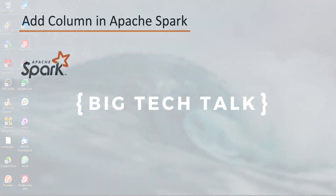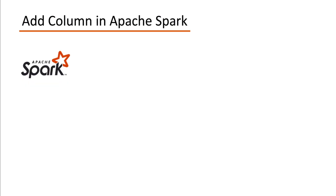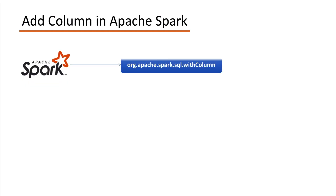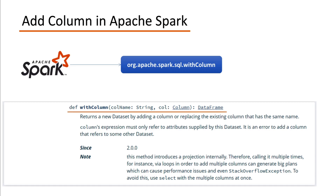Apache Spark has a function called withColumn, which can be used to add one or more columns to a data frame. The withColumn function takes two arguments: the column name, which is of type string, and the column value, which should be of type column.